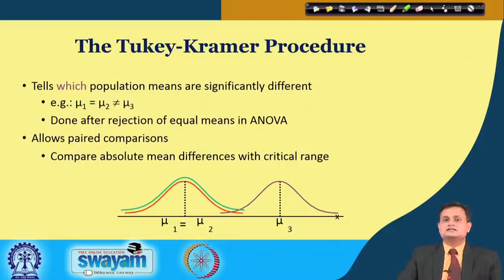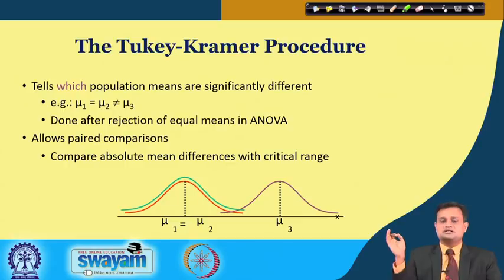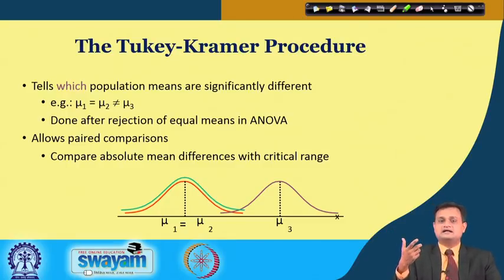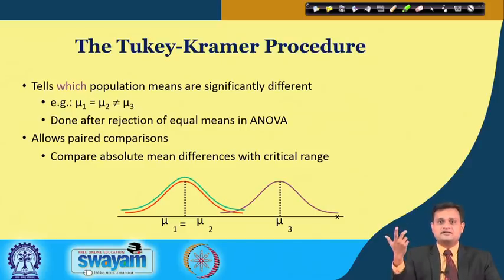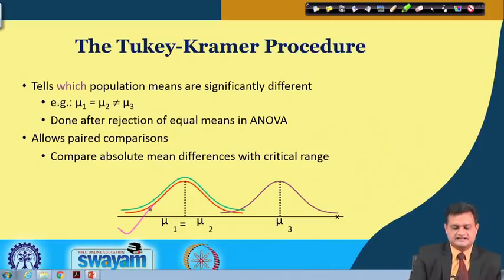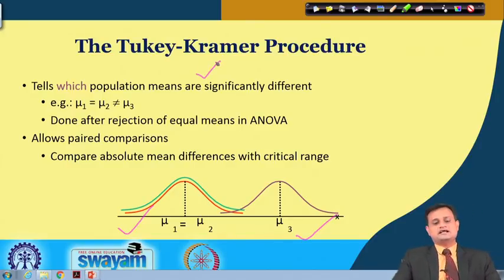Now let us see another test which helps me go into more detail of my ANOVA analysis. When the null hypothesis is rejected at a given level of significance, it means at least one of the means is not equal — but this does not end the story. I want to figure out which particular pair of means are not equal: whether it is shift 1 and 2, or shift 1 and 3, or shift 2 and 3. The situation may be that mu1 and mu2 are matching but mu3 is not, or mu1 and mu3 are matching but mu2 is not. I want to test this using a scientific procedure called the Tukey-Kramer procedure.